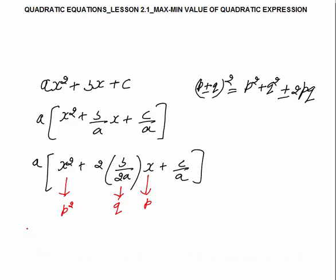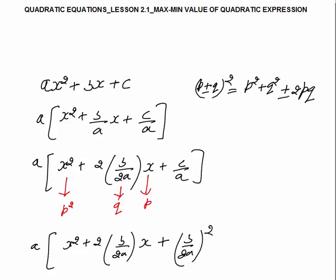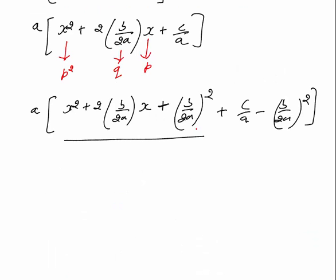So this will be like a into [x² + 2×(b/(2a))×x + (b/(2a))²]. I will add the perfect square q² and I will subtract q², that is (b/(2a))². Can I say this is p² + 2pq + q²? This is p², this is +2pq, and this is q². So I have p² + q² + 2pq, so I have a perfect square.